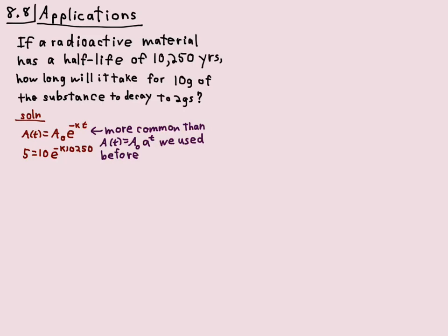The formula is A(t) — the amount as a function of time — equals the initial amount A₀ times e^(-kt). We don't know what k is, so just like those proportion problems, we have to use the half-life to find k. We start with 10 grams, and in 10,250 years we'll have 5 grams, because that's what half-life means: how long before you have half as much.